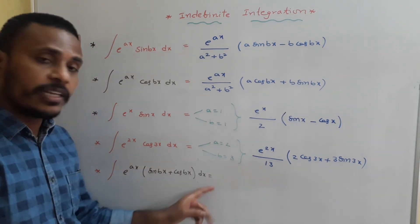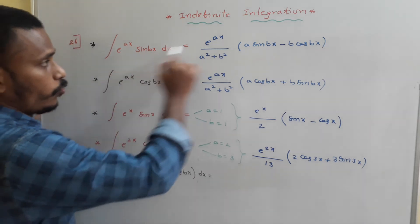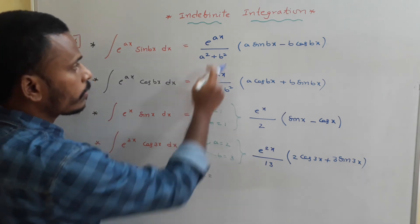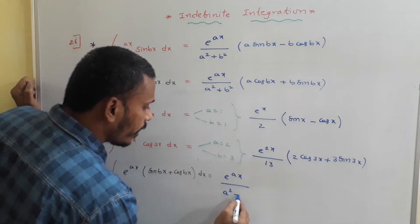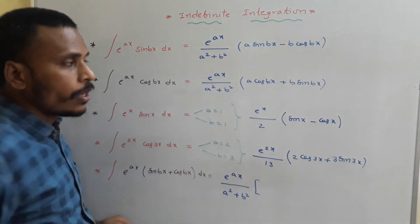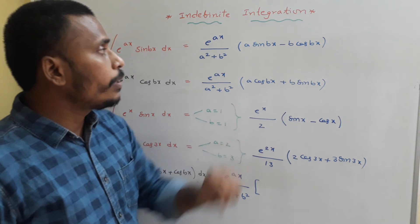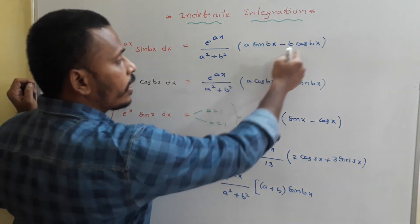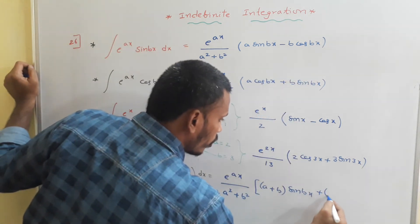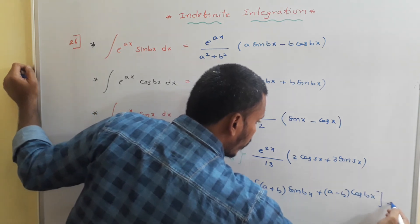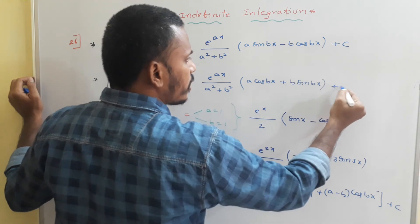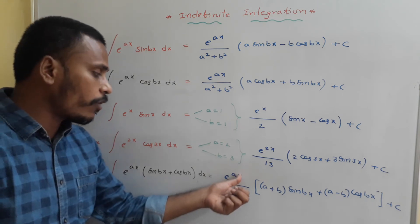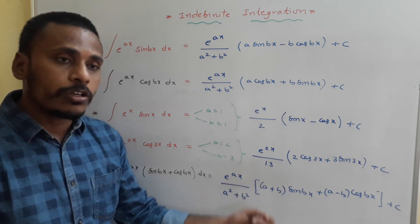For integral of e^(ax)·(sin(bx) + cos(bx))dx: add the two standard results. e^(ax)/(a² + b²) is common. Adding: a·sin(bx) − b·cos(bx) from the first result, plus a·cos(bx) + b·sin(bx) from the second gives (a + b)·sin(bx) + (a − b)·cos(bx). So the answer is e^(ax)/(a² + b²)·[(a + b)sin(bx) + (a − b)cos(bx)] + c.